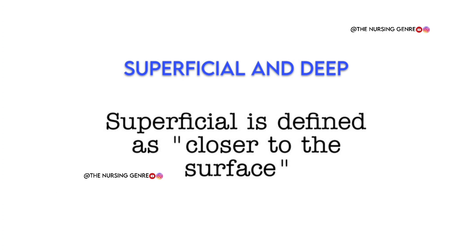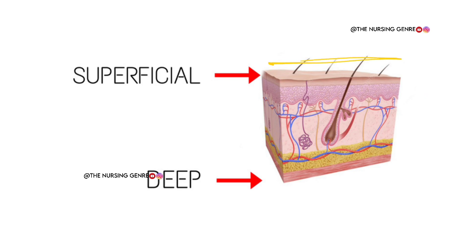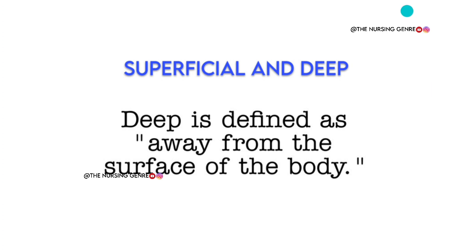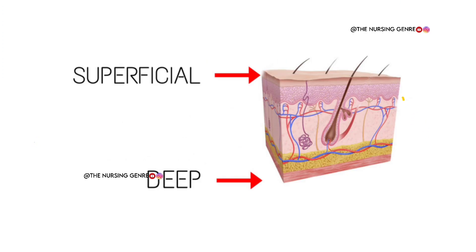Next one is superficial and deep. Superficial is defined as closer to the surface. If it is closer to the surface, then we call it superficial. Deep is defined as away from the surface of the body. If it is farther from the surface of the body, then we call it deep.